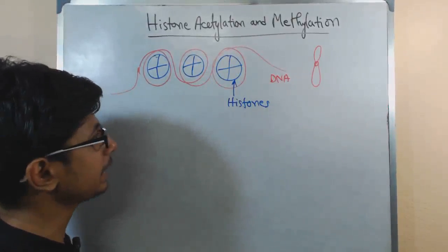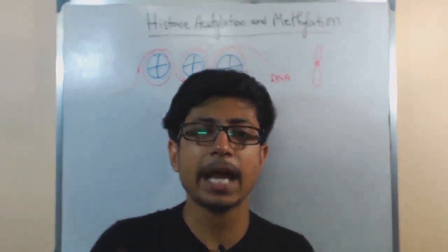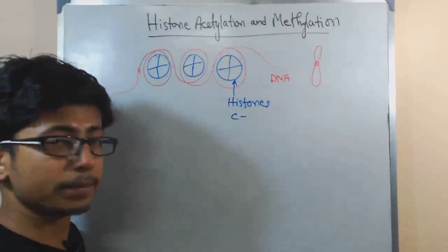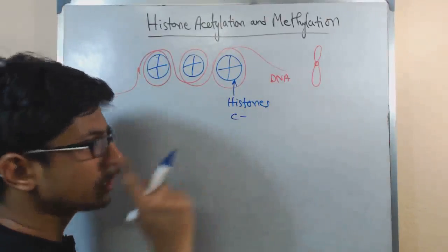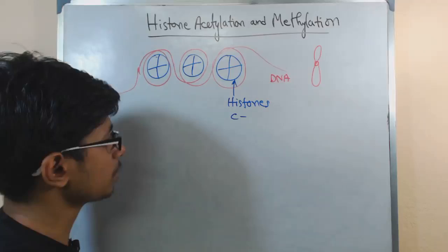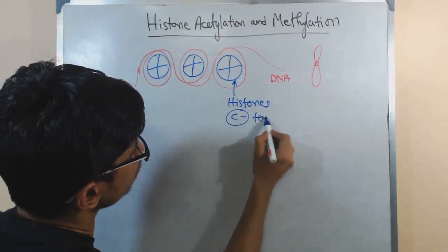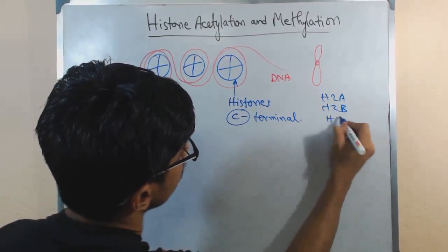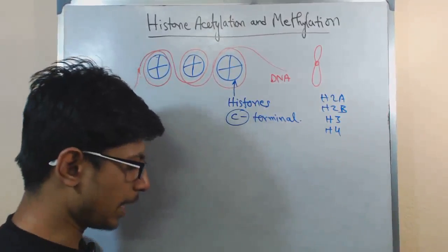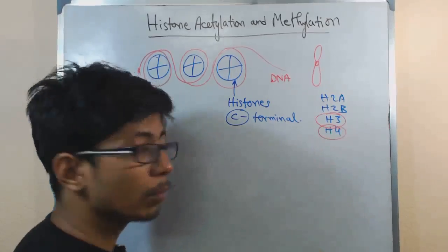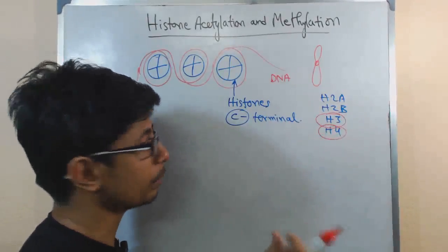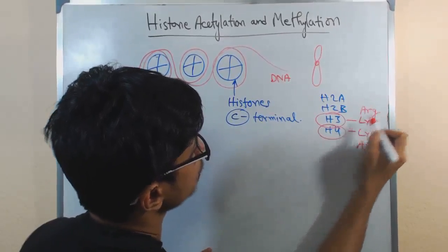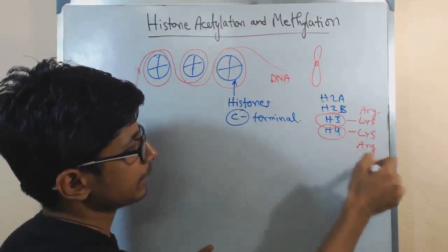Histones are protein molecules, and there are four different types: H2A, H2B, H3, and H4. They have N-terminal and C-terminal ends. The C-terminal portion of histones is usually modified by different types of modifications such as acetylation, methylation, deacetylation, and phosphorylation. H3 and H4 are much more frequently targeted for modification because they contain most of the lysine and arginine residues, which are the main sites for methylation and acetylation.